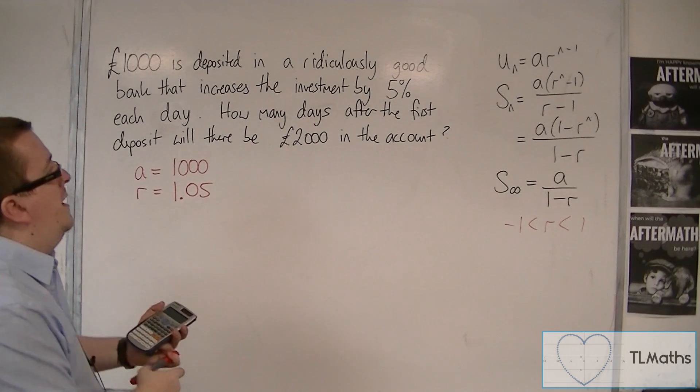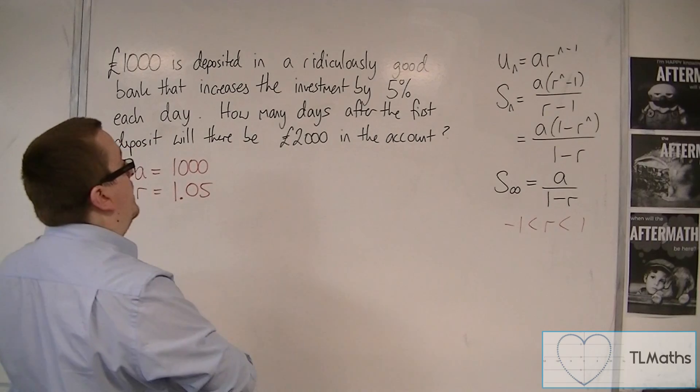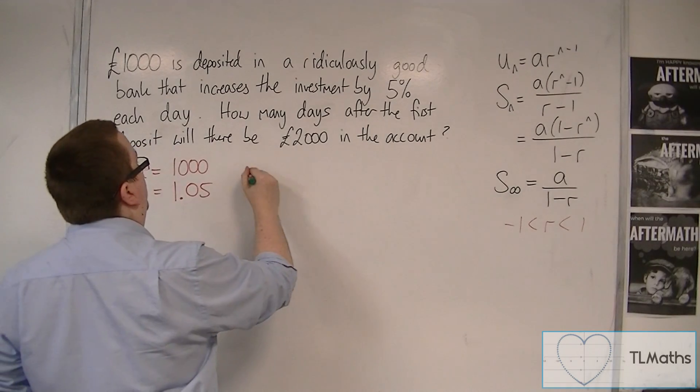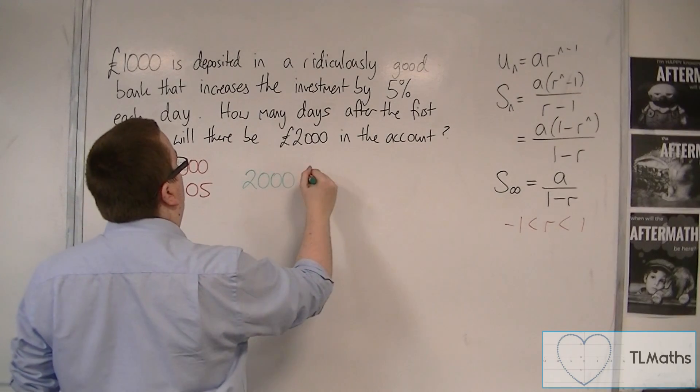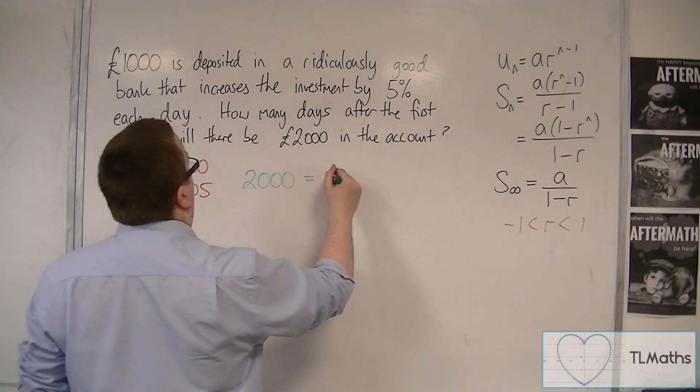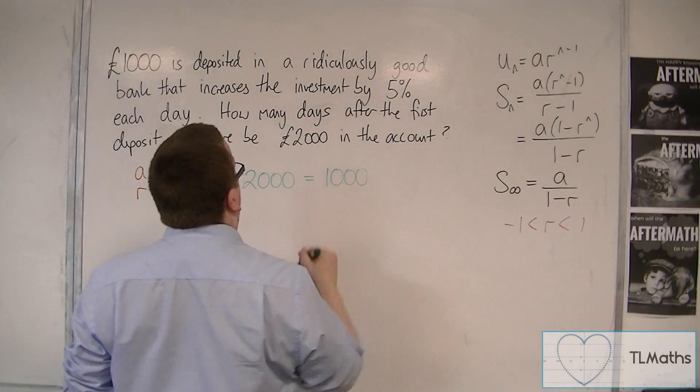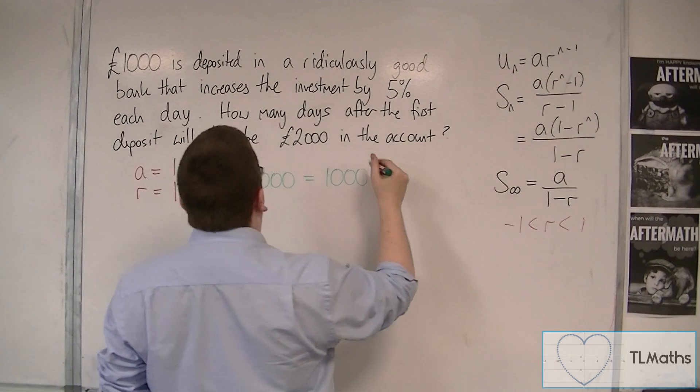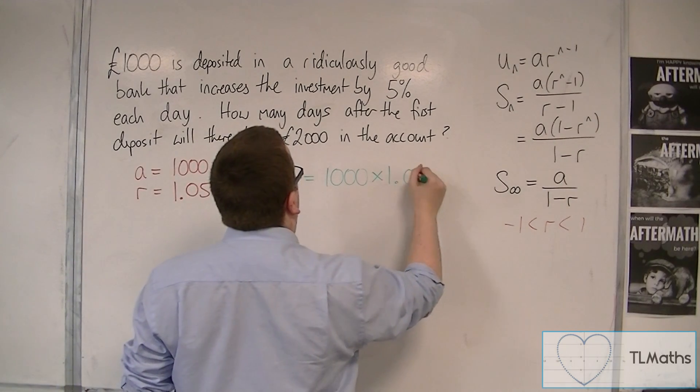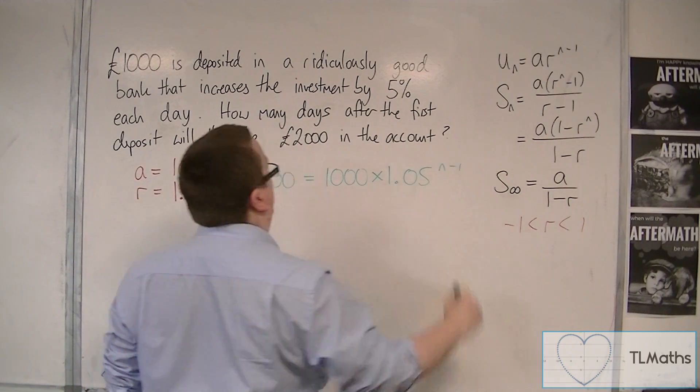For some value of N, we will have £2,000 in the account, where we have £2,000 is equal to £1,000, so A times R to the N minus 1.